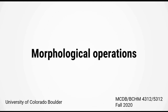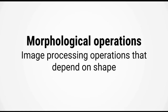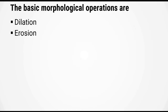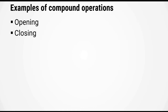In this video we're going to talk about refining your masks using morphological operations. Morphological operations are image processing functions that change the image depending on shape. There are two basic morphological operations: dilation and erosion. There are also two compound operations you should know: opening and closing. We will look at dilation and erosion in this video and opening and closing in the next.